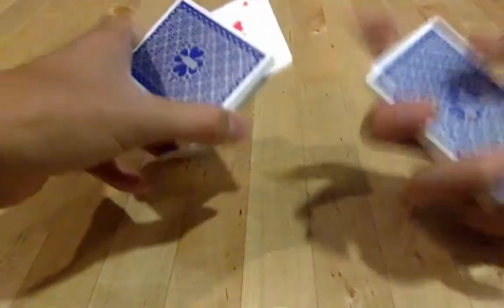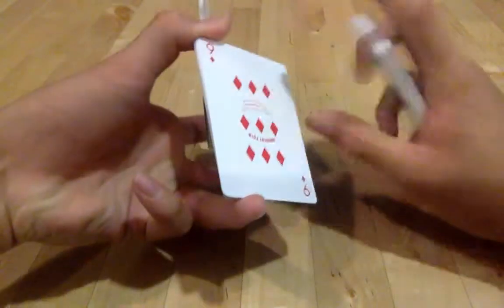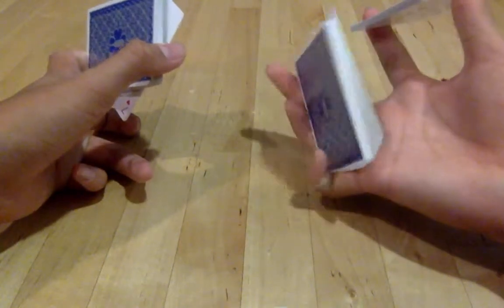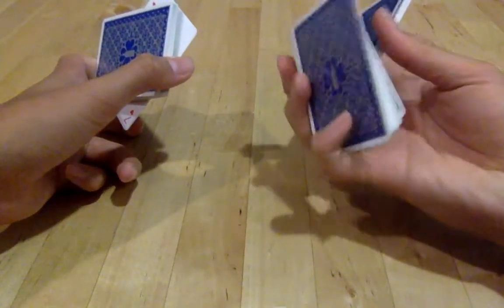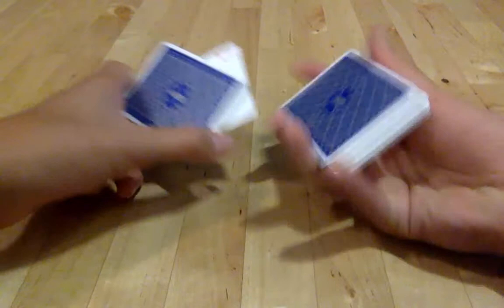Both packets combine to one, index flips one card face up. Rotate packet, index and thumb clips packet, ring and pinky give some space for both packets to combine.